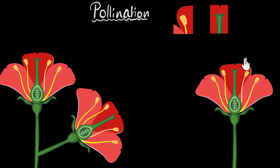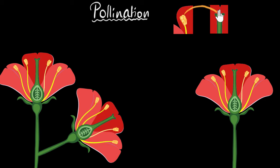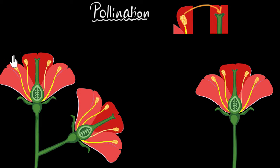Here is the pollen grain sitting on the anther, the top part of the male. Here is the stigma, the top part of the female. The act of transferring the pollen grains from the anther all the way to the stigma — that's basically what we call pollination.